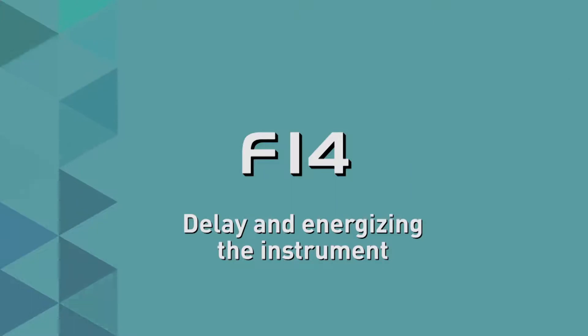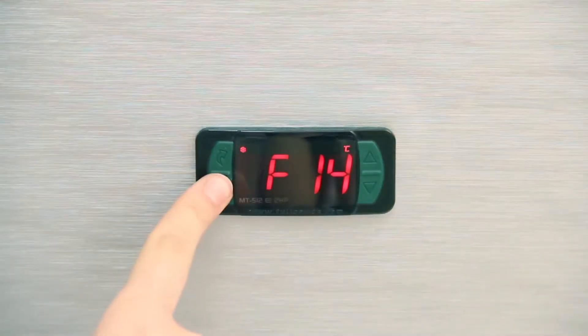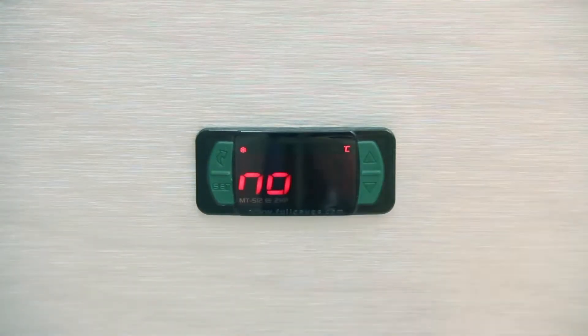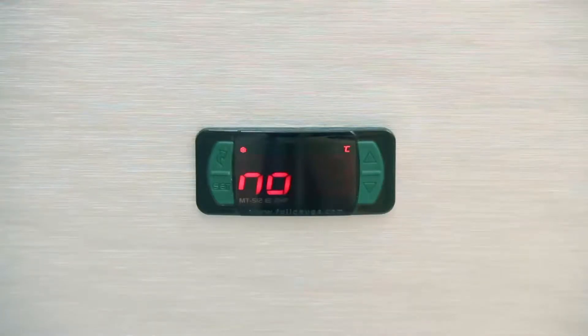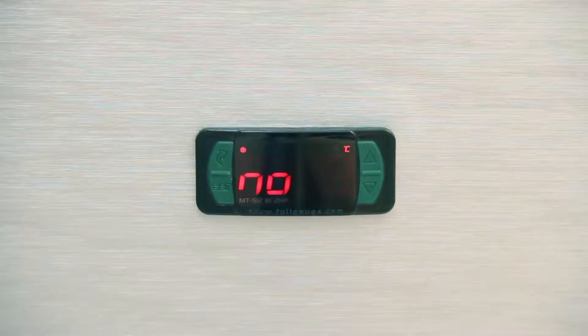F14 Delay in Energizing the Instrument: This setting prevents the generation of electricity demand peaks in the event of failure and return, when there are multiple devices. Select No so as not to delay the energizing. If you choose a delay, provide a time of 1 to 240 minutes. In the examples, we chose not to adopt the delay.